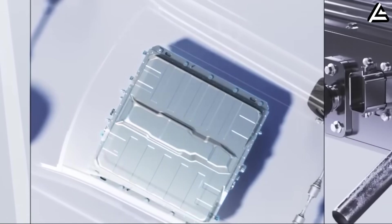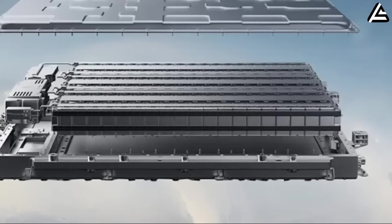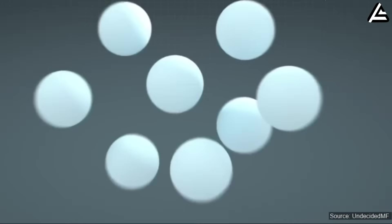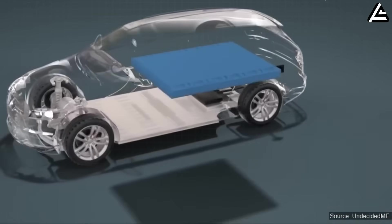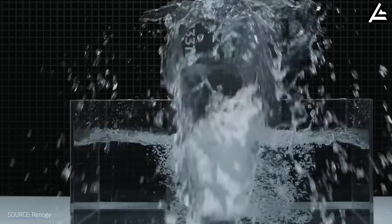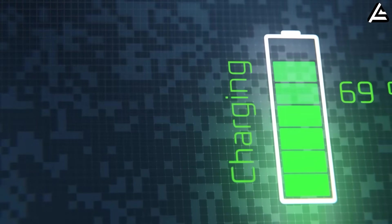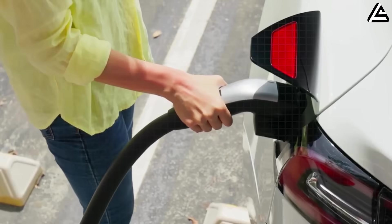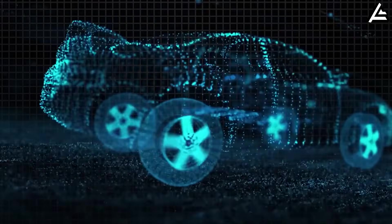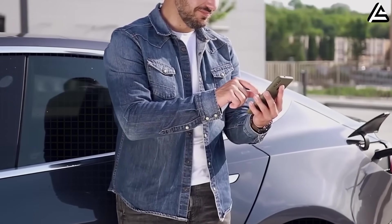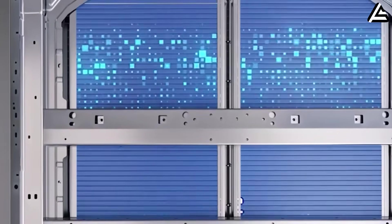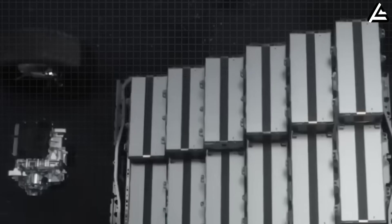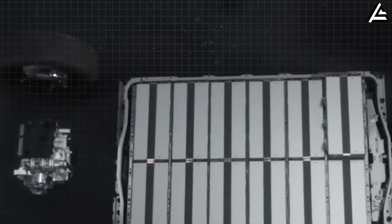Durability sees a similar adjustment. Prototype cells endure 1,500 to 1,600 cycles to 80 percent capacity in controlled conditions. But real-world driving, characterized by variable temperatures, irregular charge patterns, and repeated high-power discharges, suggests the Model 2 solid-state pack will sustain roughly 1,200 to 1,300 cycles before reaching 80 percent capacity for an average driver. That still corresponds to over 1.2 million kilometers, effectively covering the vehicle's entire operational life.